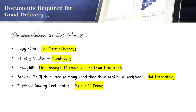The last document is Testing or Quality Certificates. This is not applicable for all POs, but in some cases it is specifically mentioned — for example, in electrical item procurement, the PO may specify that the vendor must provide Quality Test Certificates. In that case, if the vendor has not provided the quality or testing certificates as per PO terms, the delivery is not accepted at the buyer's end.